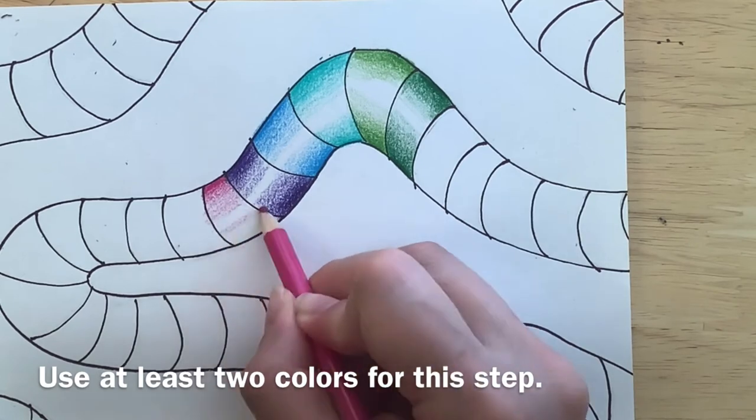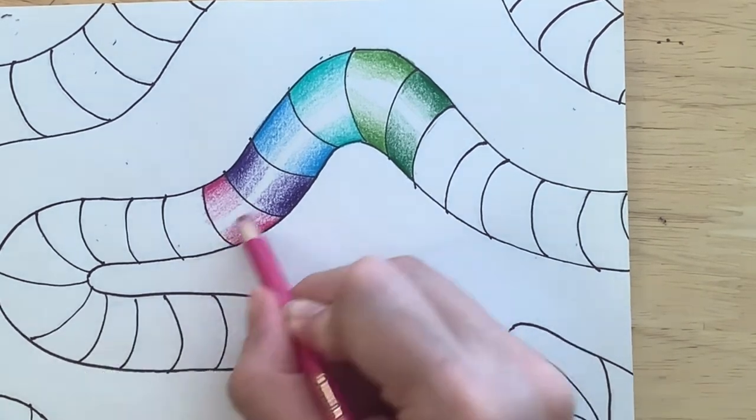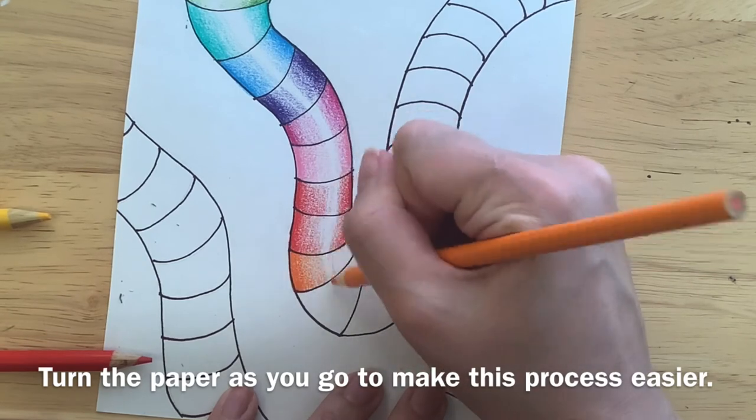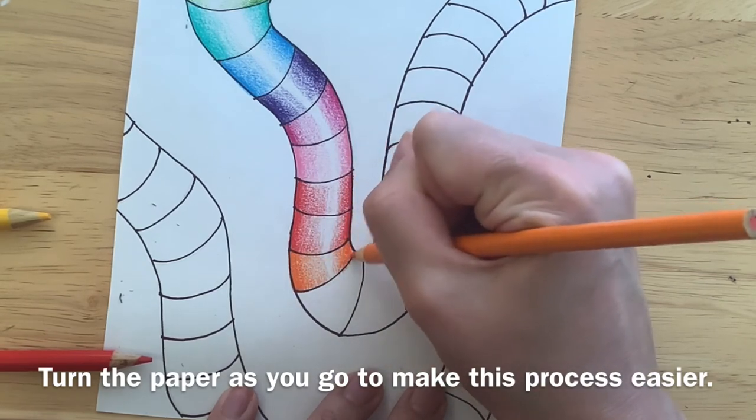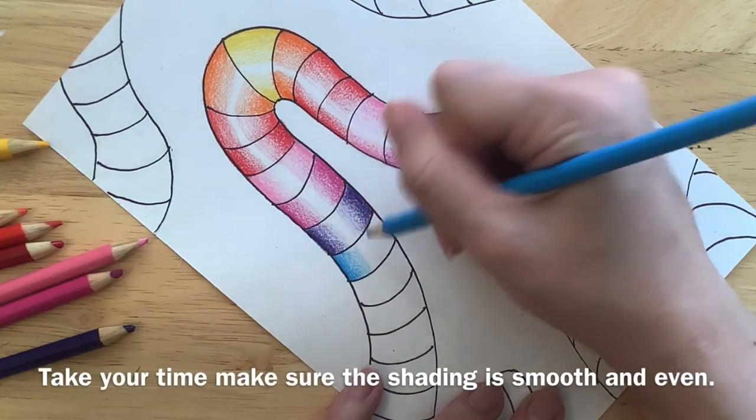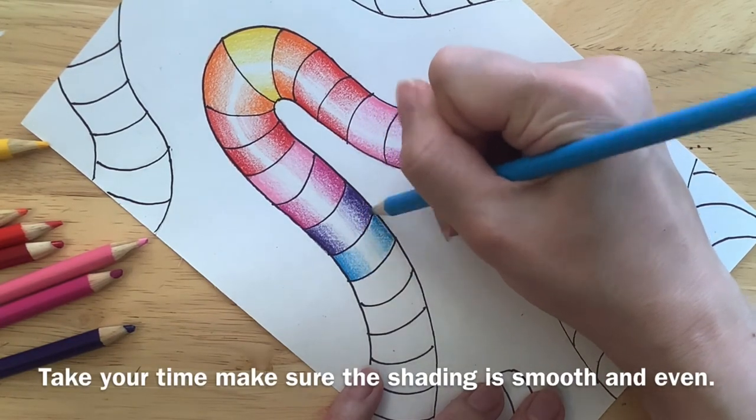Use at least two colors for this step. Turn the paper as you go to make this process easier. Take your time and make sure the shading is smooth and even.